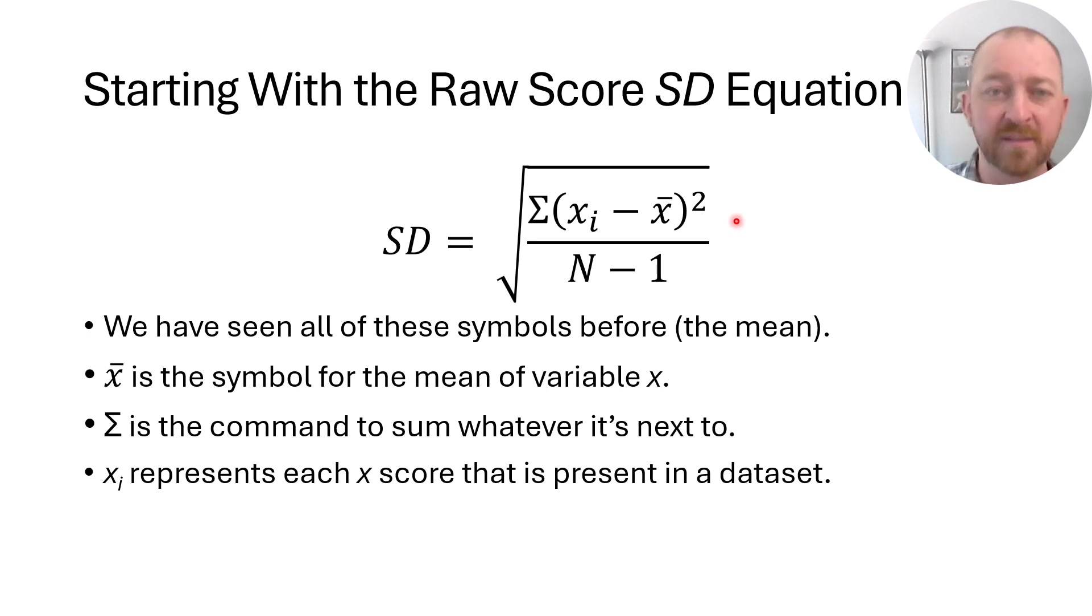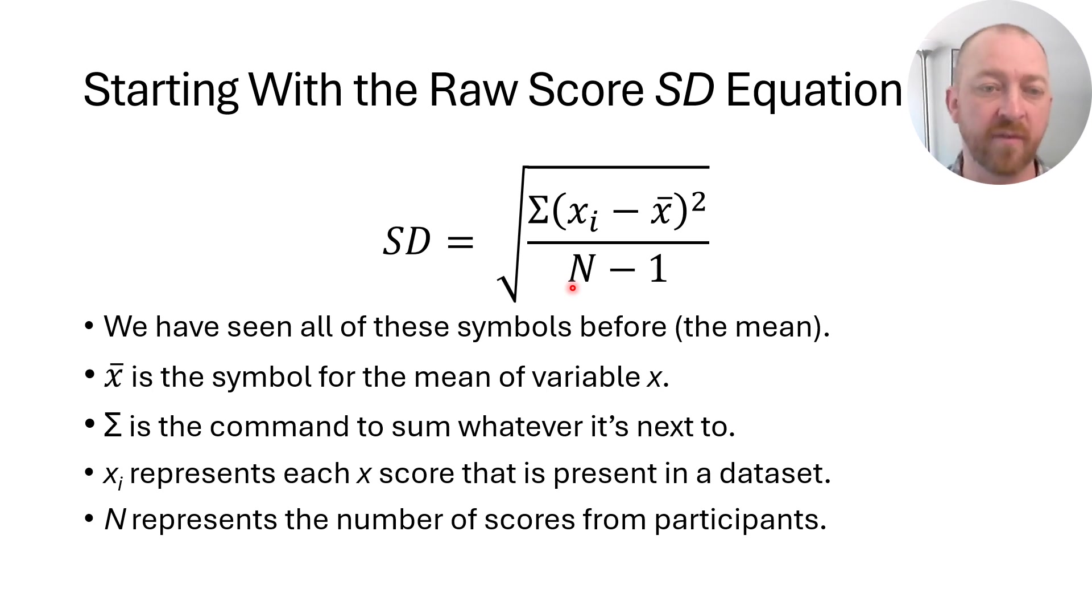Now you'll recall, x sub i means an observation of the variable that we're calling x. So a particular data point, a datum, you could say. And the little i means do this for every one of them. So i means every single one of the values of x. And then we're going to subtract the mean from every single value of x. And N, of course, we've seen that before in the mean. That means the number of observations that we have of that variable.